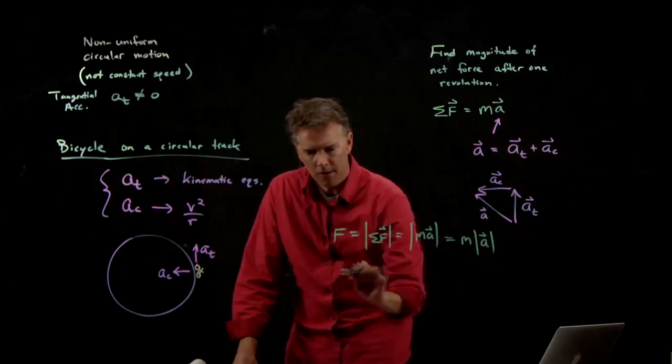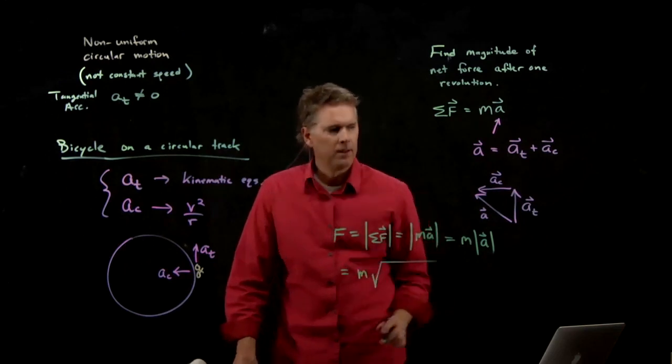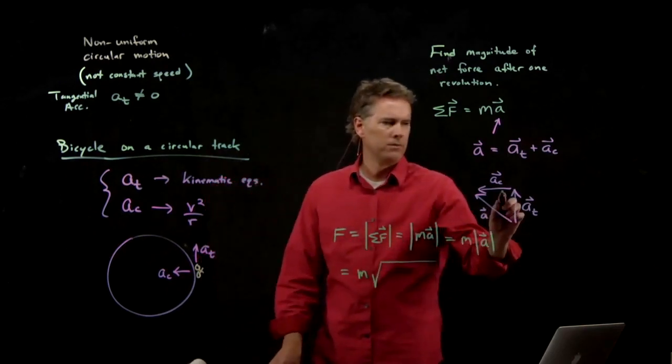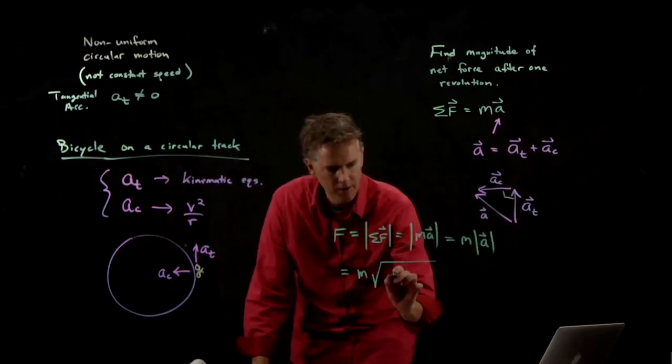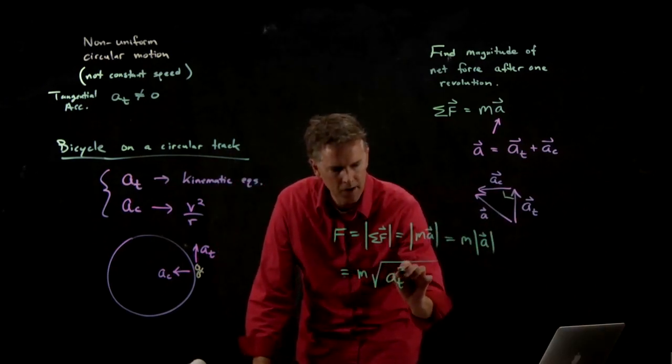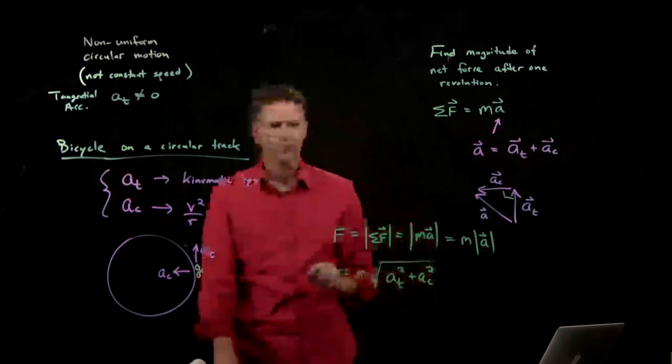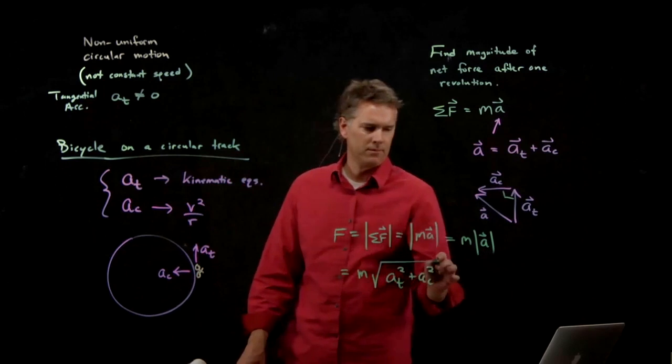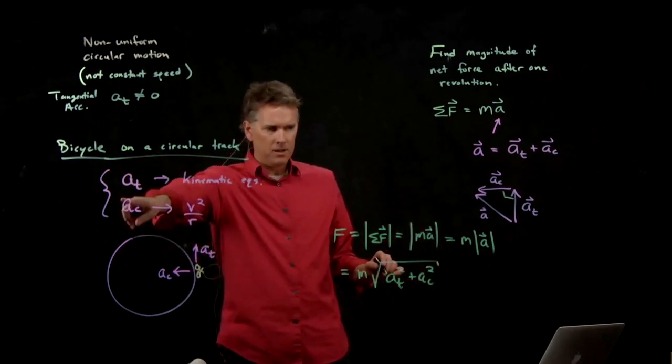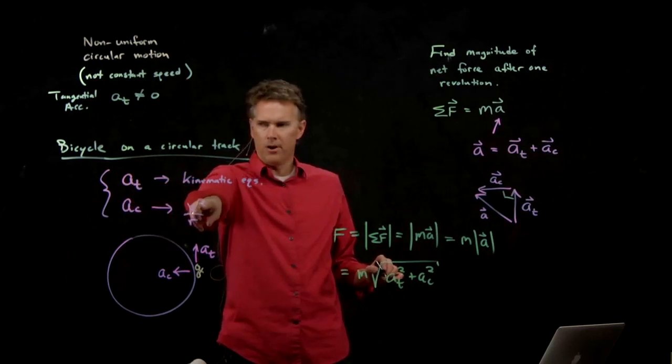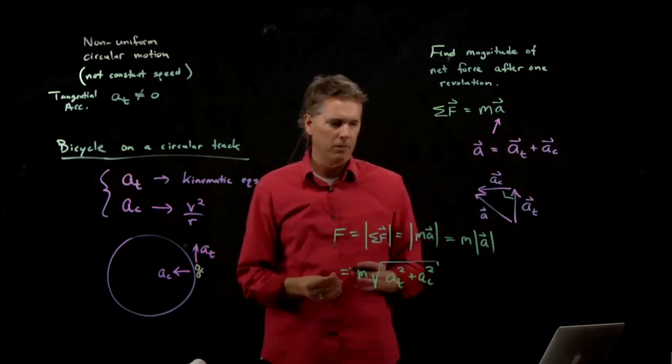There's my a right there. What is the magnitude of a? This is a right triangle. And so the magnitude of that hypotenuse is just square root of a_t squared plus a_c squared. You already know what a_c is. It's just v squared over r. a_t you'll have to figure out by solving the kinematic equations.